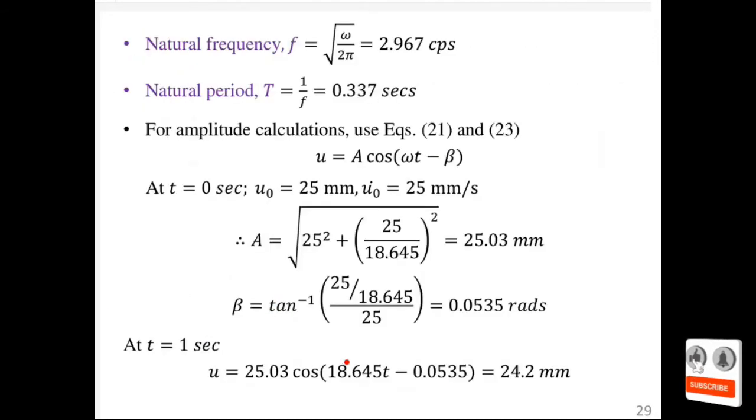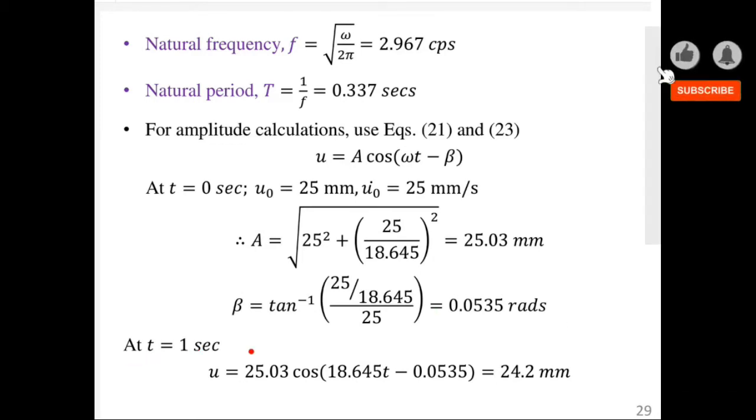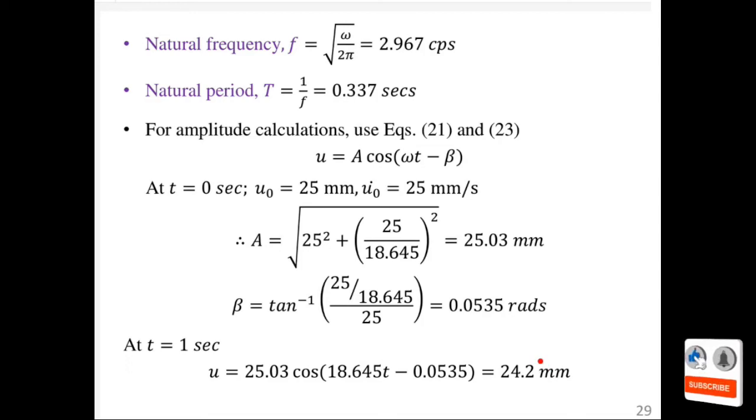At t equals 1 second, using this expression, you just need to substitute the values. Since you have found the values of C and beta, you substitute and get displacement equals 24.2 millimeters. We started at an initial displacement of 25 millimeters.